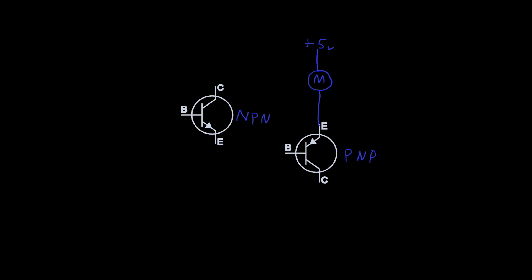We need to complete this circuit - we have 5 volts but it's just floating. Right here where it connects with the emitter, we'll have a voltage called V_E. Because we're driving with 5 volts, V_E will be less than 5 volts due to the drop through the motor, but very importantly it's going to be greater than 0 volts, or ground. A PNP type turns on when the base - your control - is low relative to the emitter.